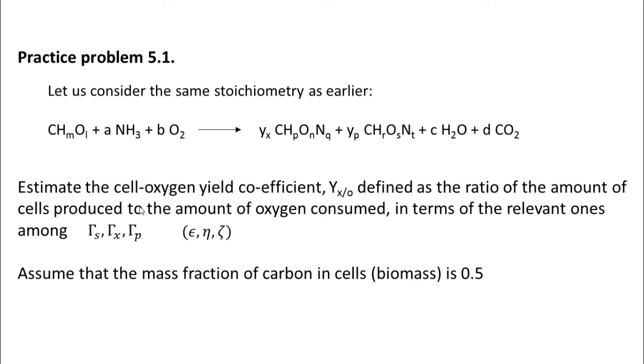Estimate the cell oxygen yield coefficient Y_x/O defined as the ratio of the amount of cells produced to the amount of oxygen consumed in terms of the relevant parameters among gamma_s, gamma_x, gamma_p, epsilon, eta and xi. Assume that the mass fraction of carbon in cells is 0.5.